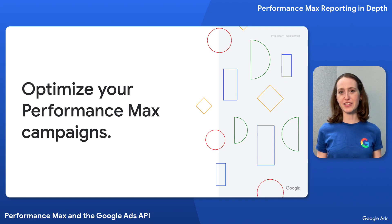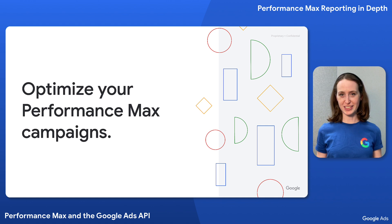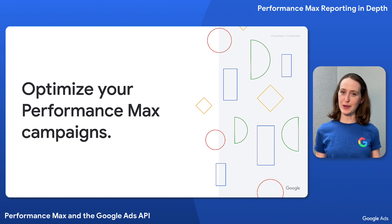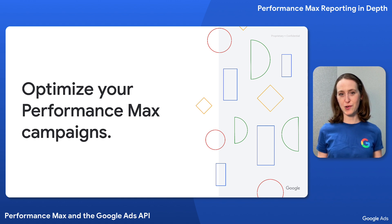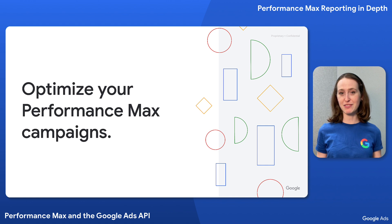We've seen how you can query various reports to retrieve existing resources and to measure performance in relation to your business goals. But we've only scratched the surface, so let's dig a little deeper into some examples of how you might use PMAX reporting in the API to optimize your campaign performance and ultimately reach the right customers at the right time.